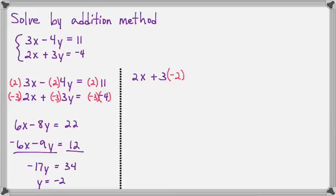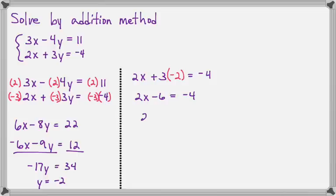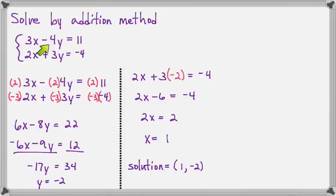Now we take y equals negative 2 and plug it into either equation. I chose the bottom equation: 2x plus 3 times negative 2 equals negative 4. 3 times negative 2 is negative 6. Add 6 to both sides, then divide by 2, and x equals 1. So our solution is 1 comma negative 2. But be smart and check: make sure 3 times 1 minus 4 times negative 2 really equals 11, and 2 times 1 plus 3 times negative 2 really equals negative 4.